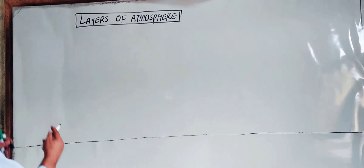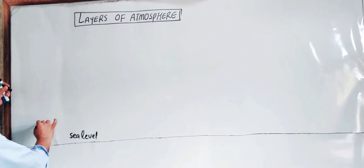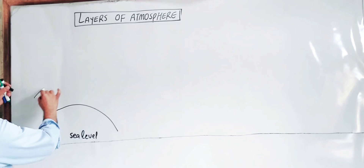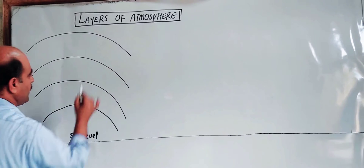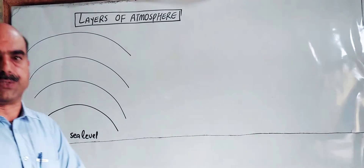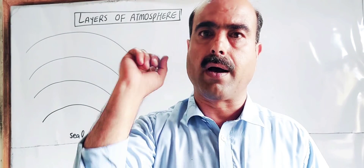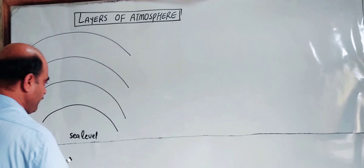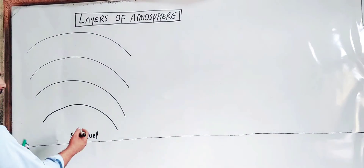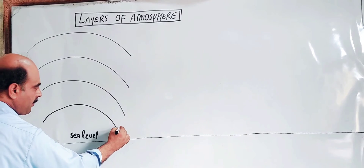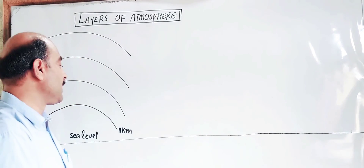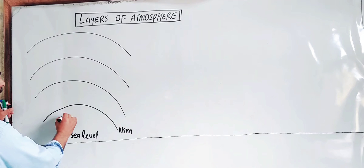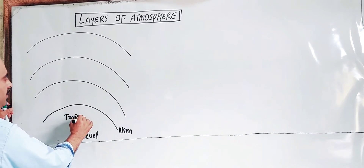There are four layers of atmosphere. Starting from sea level, we have four layers. The first layer is about 11 kilometers from sea level — the sea level to 11 km area.